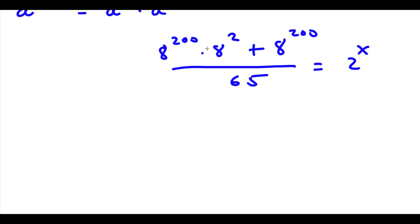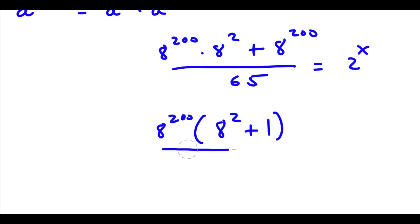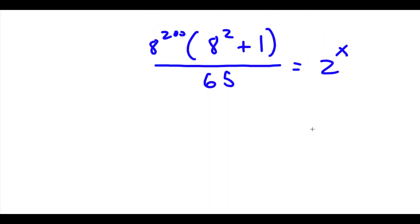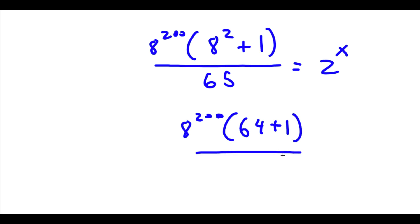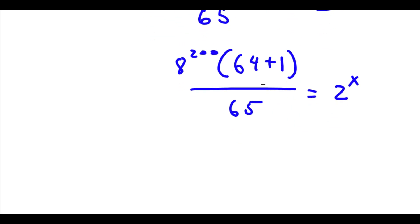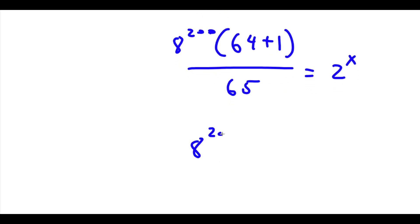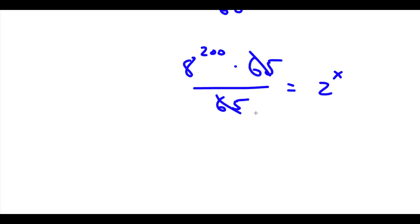Now from the numerator I can factor out 8 to the power of 200. So I have 8 to the power of 200 times 8 to the power of 2 plus 1, over 65, is equal to 2 to the power of x. Now 8 to the power of 2 is 64. So I have 8 to the power of 200 times 64 plus 1, over 65, is equal to 2 to the power of x. Now 64 plus 1 is 65, so I have 8 to the power of 200 times 65 over 65 is equal to 2 to the power of x. These two 65s cancel out.